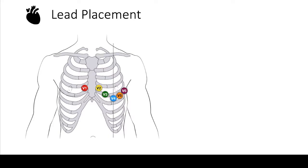The first lead you always place is V1. To place V1, you go to the right side of the sternum and count down four intercostal spaces — one, two, three, and four — and right there you place V1. To place V2, you go lateral to the sternum across to the left fourth intercostal space and place V2.